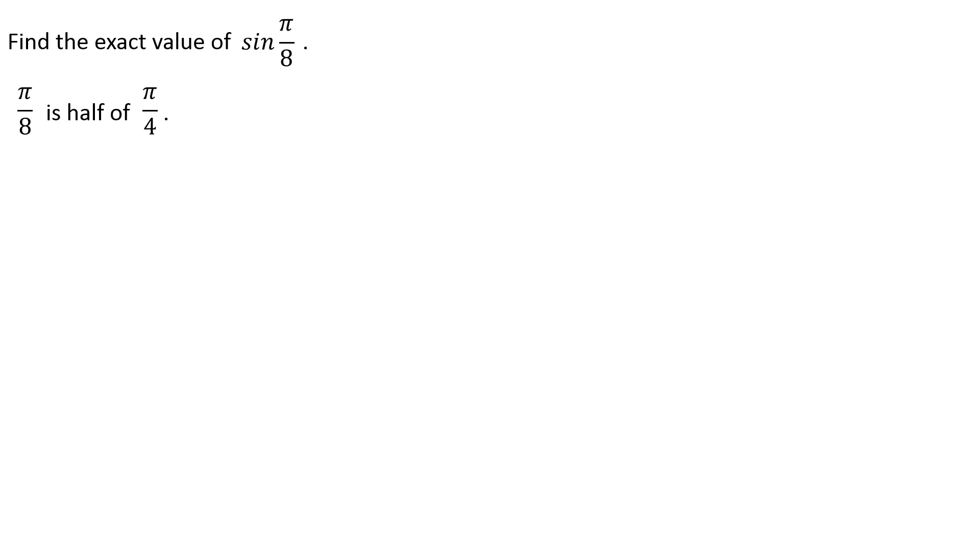And of course, π over 4, that's a 45-degree angle. So of course, that's on our unit circle. So we're in business. And π over 8 is going to be in quadrant 1, right, because it's more than 0 but less than π over 2. So I know the answer is going to be positive.